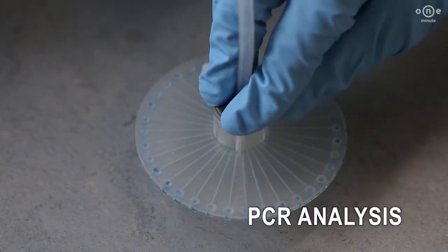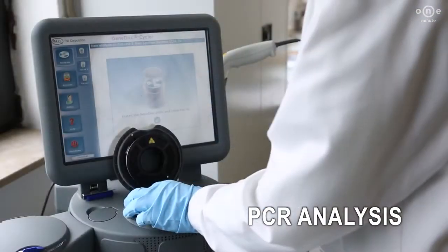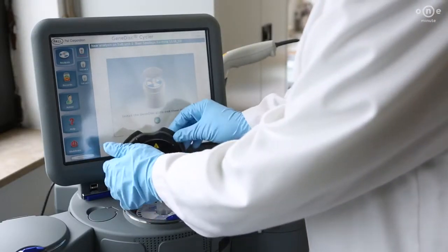Once the GeneDisc plate is filled, insert it into the cycler, close the lid, and the analysis will start automatically.